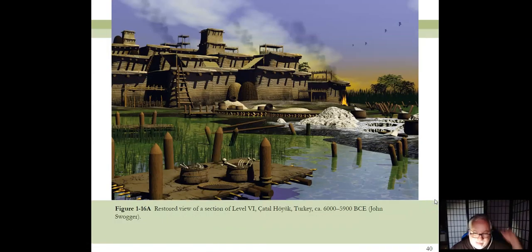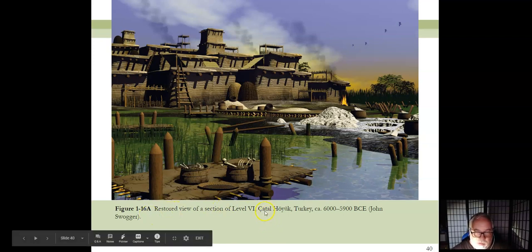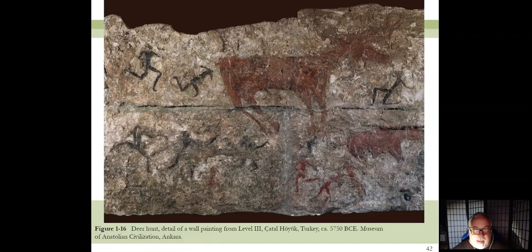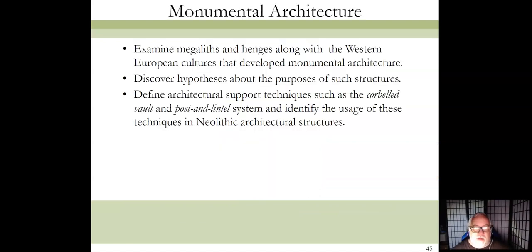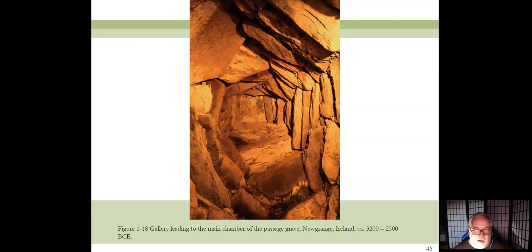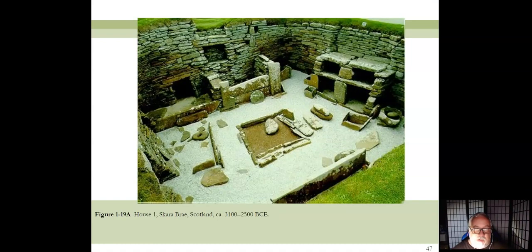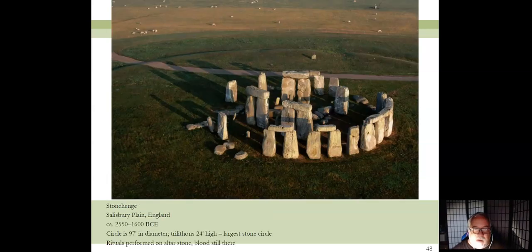Çatal Hüyük is the oldest city in the world that we know of — the first city ever built. We have some wall paintings from houses there because the site was covered by a volcano, much like Pompeii. I don't have it written on the slide but I'm telling you so you'll get it right on the test. This site might look familiar to Star Wars fans — it's one of the locations from the recent Disney trilogy.